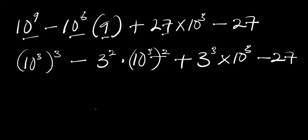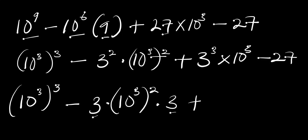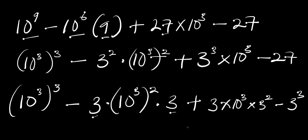Now we have (10³)³ minus 3 times (10³)² times 3, because 3 times 3 is 3². Plus 3 times 10³ times 3², which is 3 times 3² giving 3³ again. And minus 27 is simply 3³. So we haven't changed anything — this is a rearrangement of the same expression.